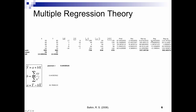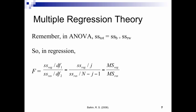Our regression term is simply the difference between what we predict and what the mean value was — that's how we get the regression value. We can square that and sum them up, and those have mathematical properties that we'll use. We can compute the sum of squares regression divided by degrees of freedom to get the mean square regression, and do the same with the sum of squares residuals to get the mean square residuals. This is the same structure as ANOVA, because ANOVA is simply a special case of regression — the math is very similar.